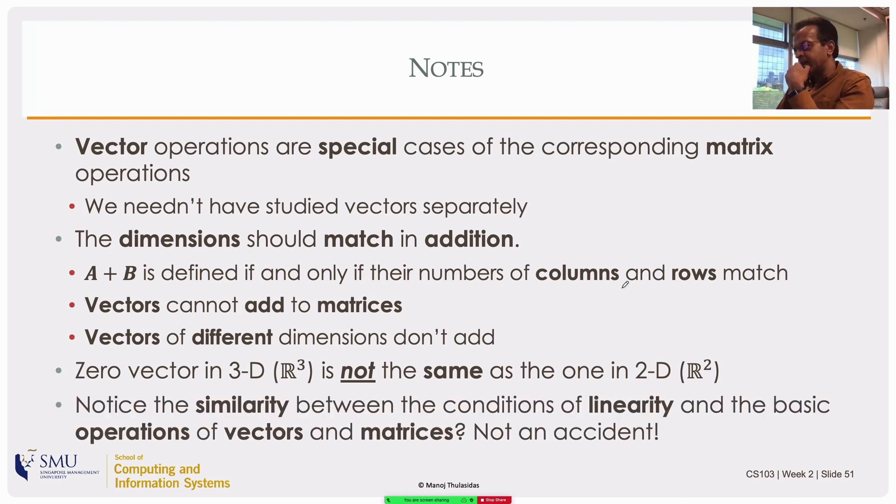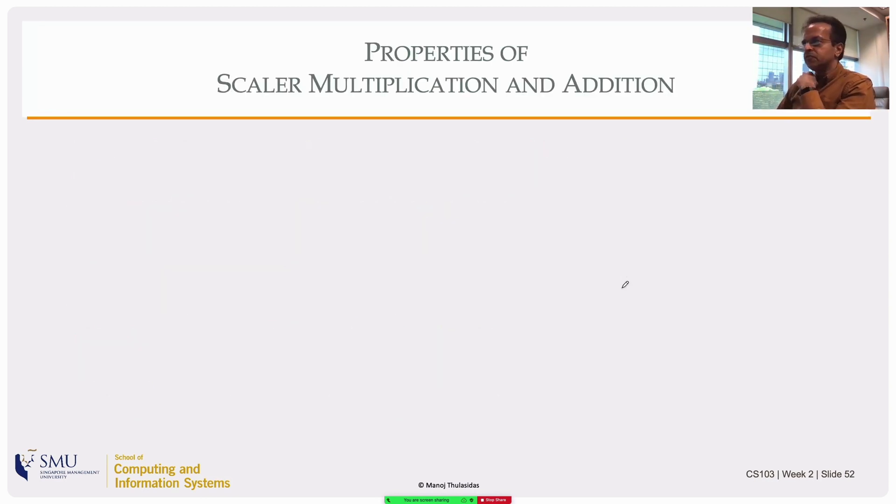In the definitions of our scalar multiplication and addition of matrices or vectors, there is a similarity, a correspondence with our homogeneity and additivity conditions. It's not an accident. That's the basis of linear algebra.